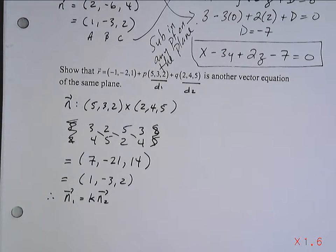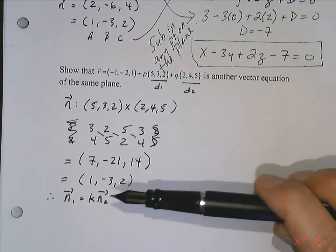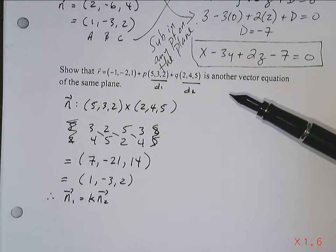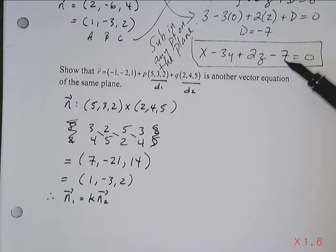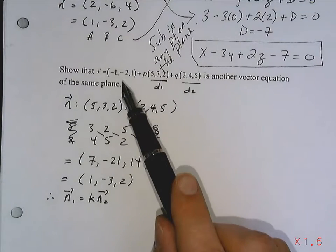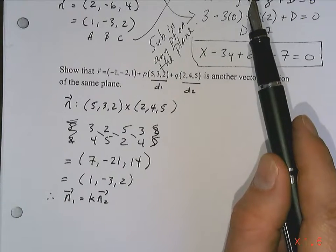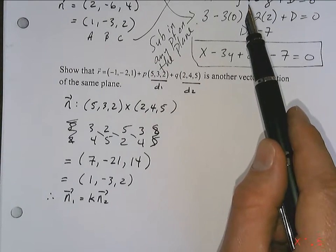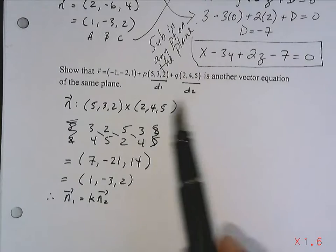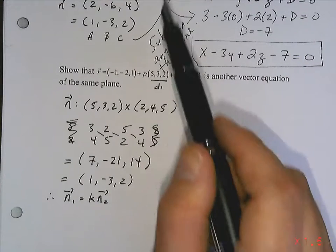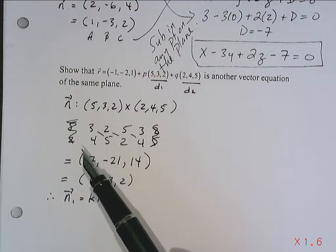So I guess the next thing I could do is either check that they have the same D. So I could take this normal, plug it into the equation, and show that they have the same D value, in which case those would be the same plane. Or I could prove that the point on this plane also lied on that plane. Or the point on this plane also lies on that plane. So I could put this into parametrics, take this point, and plug it in. That's a lot of work, I have to admit.